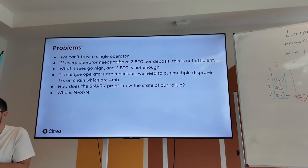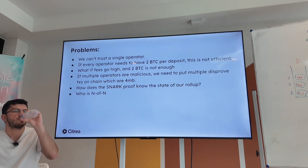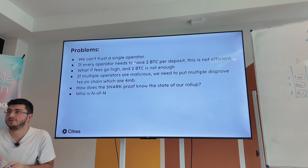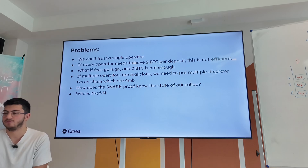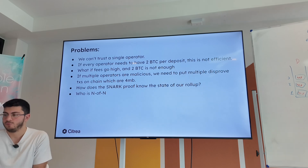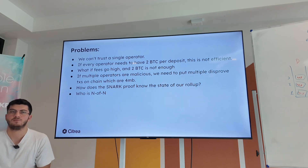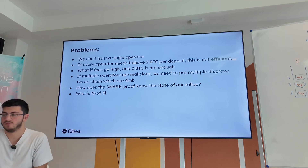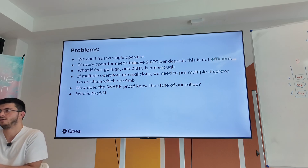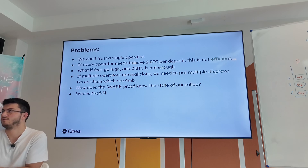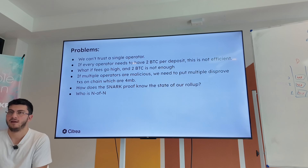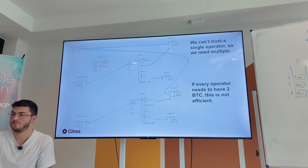This bridge design has several problems: we can't trust a single operator. We can have multiple operators, but requiring two BTC collateral per deposit per operator is inefficient. What if Bitcoin fees go high and two BTC isn't enough to send the disprove transaction? Multiple malicious operators would require multiple four-megabyte disprove transactions, filling entire Bitcoin blocks. Also, how does the SNARK proof know the rollup state without knowing Bitcoin's state? Proving the full Bitcoin chain non-interactively is extremely difficult. And who is this N-of-N? We'll tackle each problem one by one.